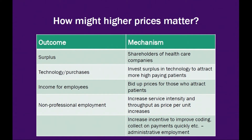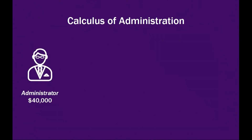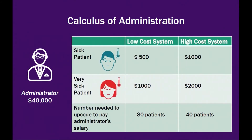And the final possibility is you actually hire more administrators. Here's why. Imagine that an administrator costs $40,000 a year. And imagine there are two kinds of patients: sick patients and very sick patients. Whether a patient is sick or very sick, they get different amounts of payments — twice as much for the very sick patient as for the sick patient.